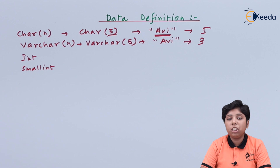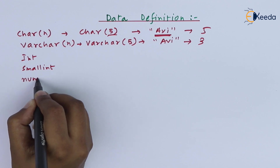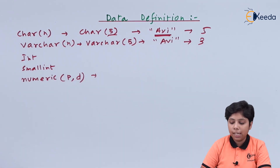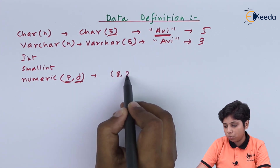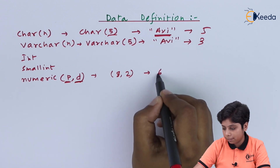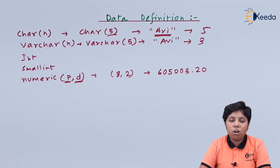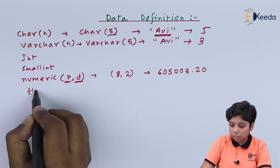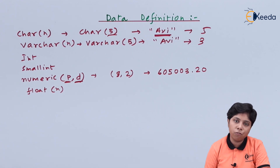Next is the NUMERIC data type, which is important when we need precision after the decimal point. We specify it as NUMERIC(p, d), where p is the total number of digits and d is the precision of the decimal point. For example, NUMERIC(8, 2) means 8 digits total with the last 2 being after the decimal. Next is FLOAT, a floating point number without fixed precision, and there is also DOUBLE PRECISION for real numbers.